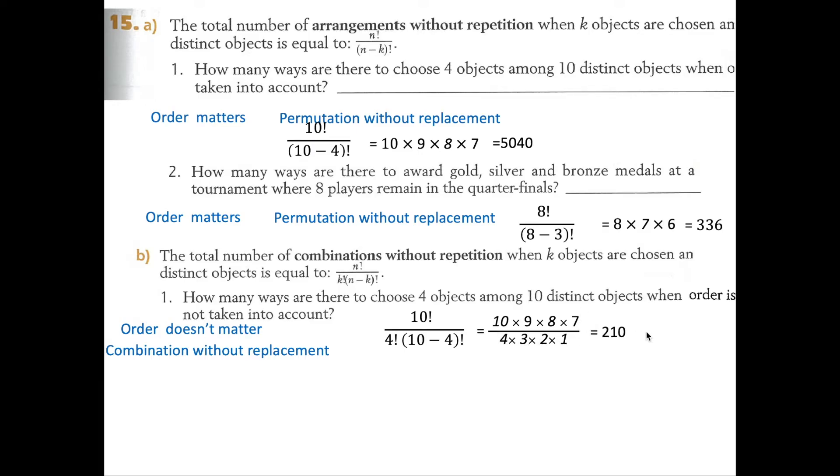We have 10 times 9 times 8 times 7 divided by 4 times 3 times 2 times 1, which gives us 210 for B. The answer is 210 if we're choosing 4 objects out of 10 distinct objects.